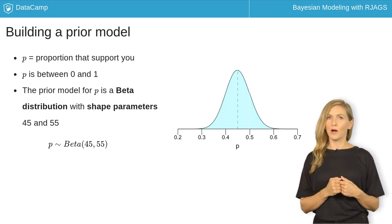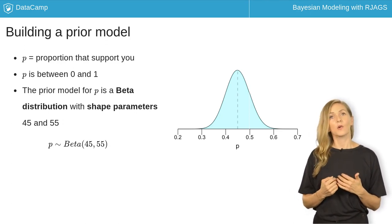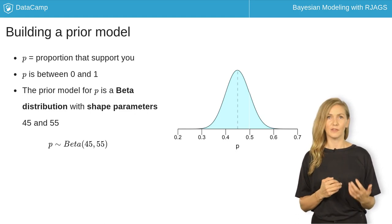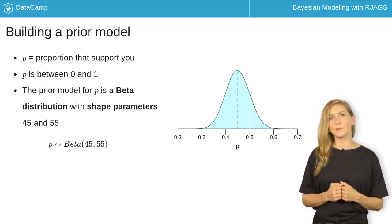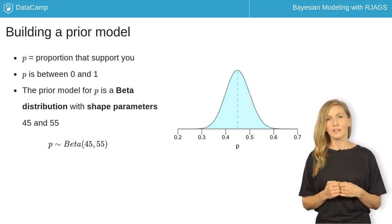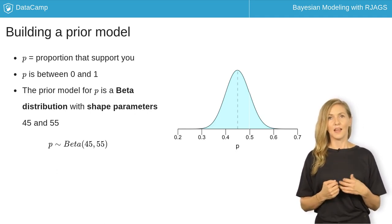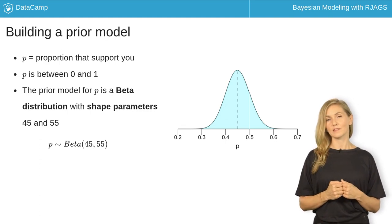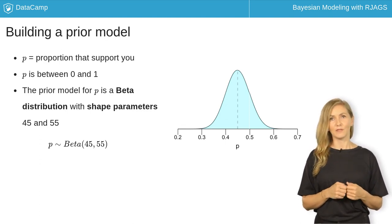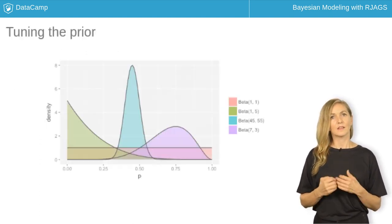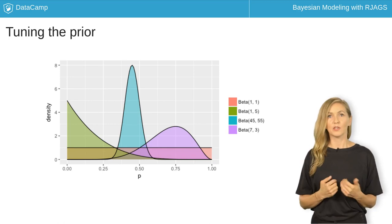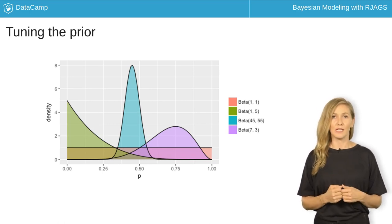The original prior model for p, shown here, corresponds to the beta distribution with shape parameters 45 and 55. We communicate this model using mathematical notation that specifies the name of the distribution, beta, and the parameter values upon which it depends, 45 and 55. Tuning the beta shape parameters produces alternative prior models of p, just a few of which are shown here.